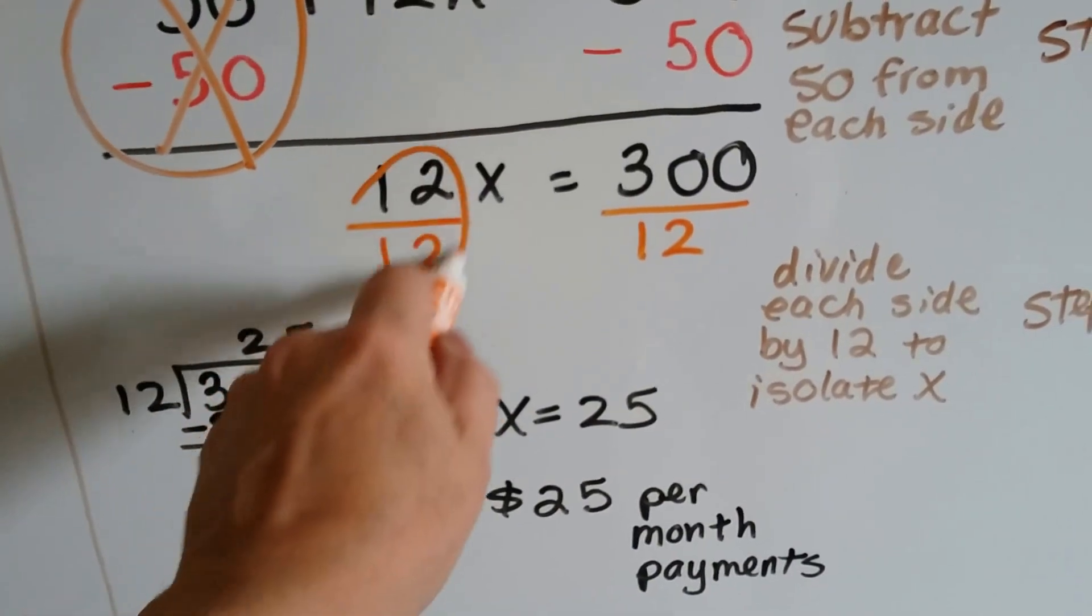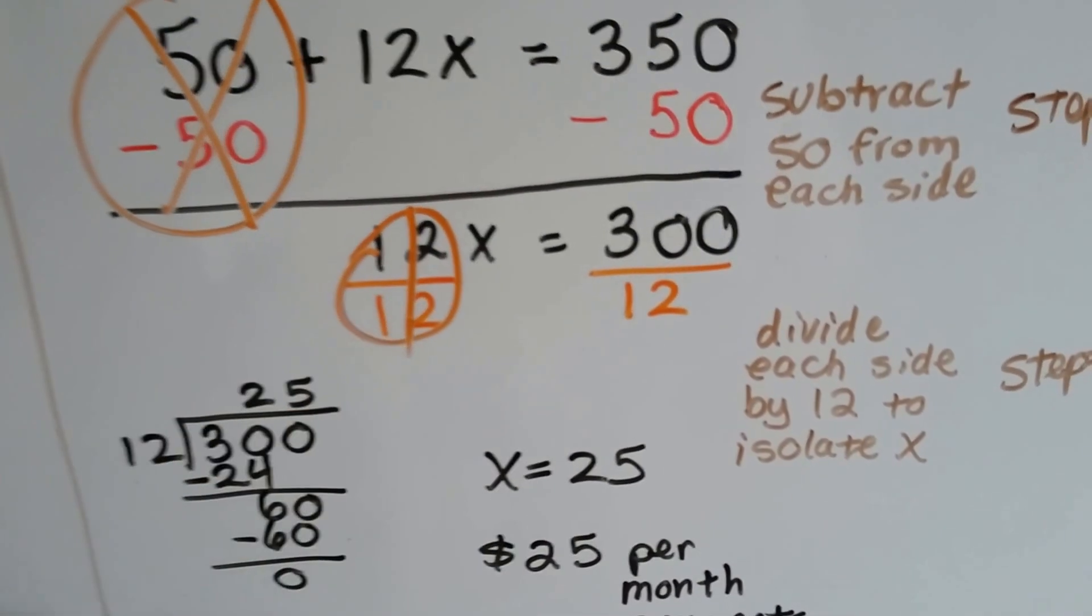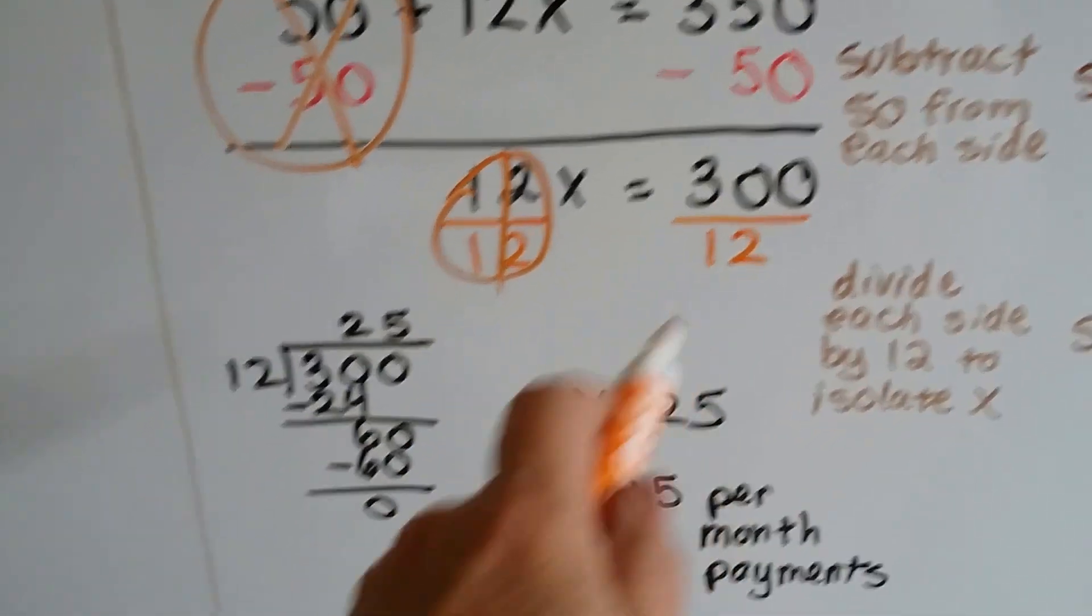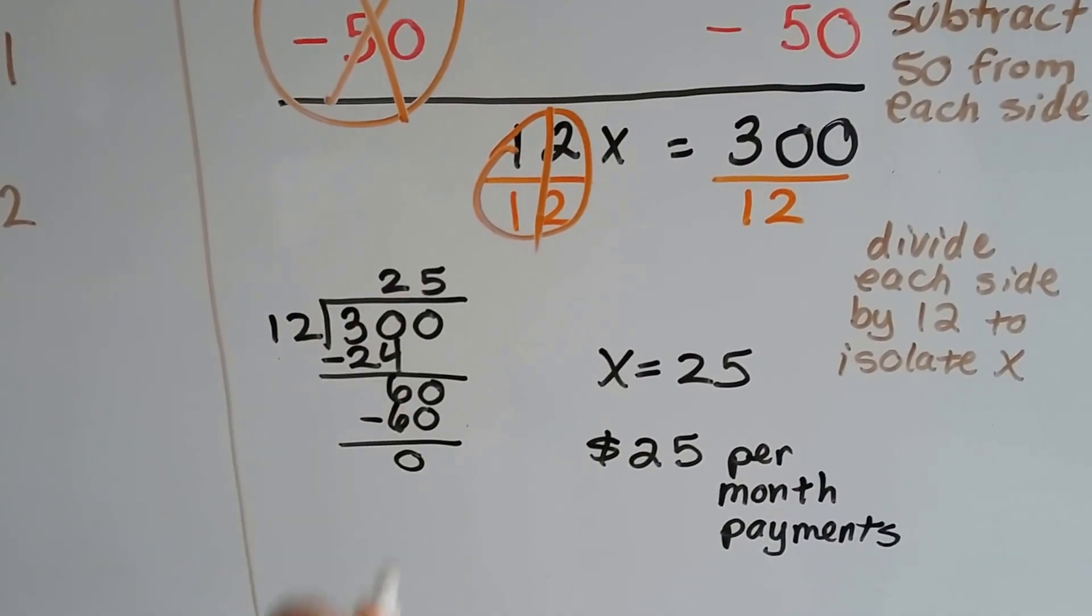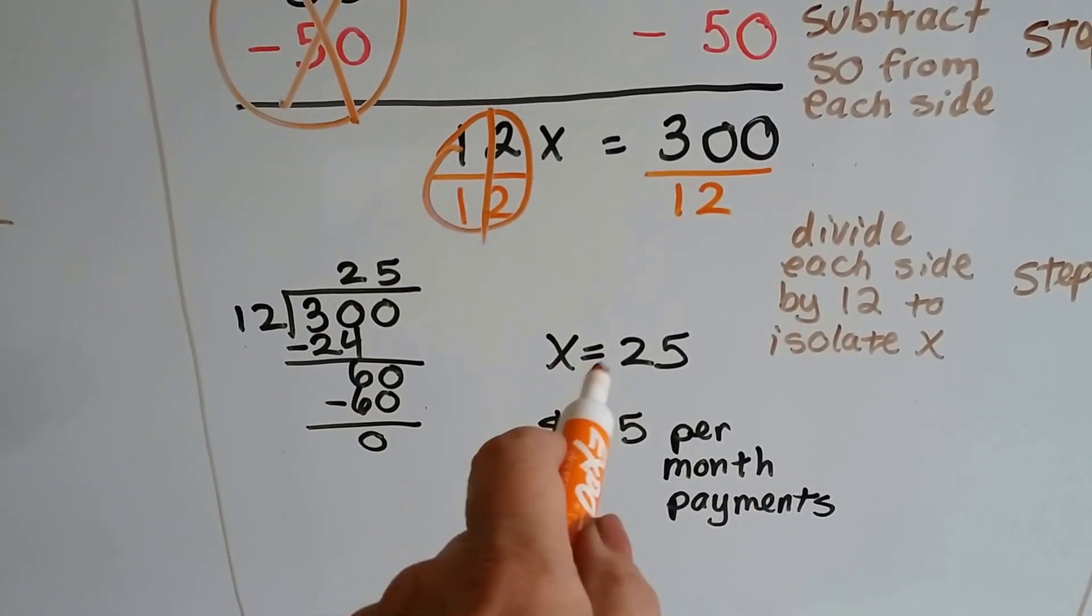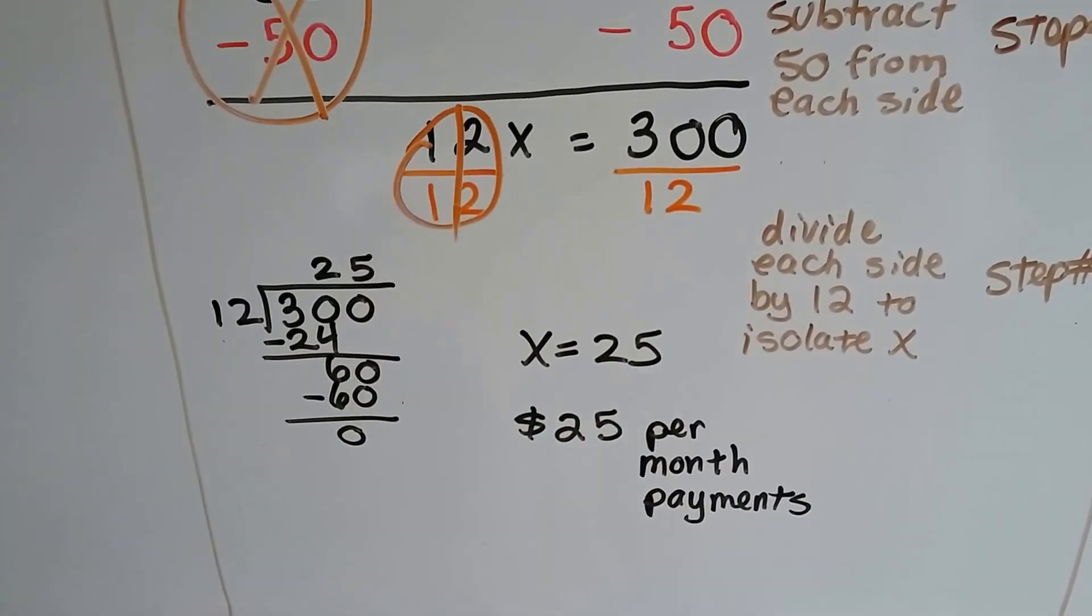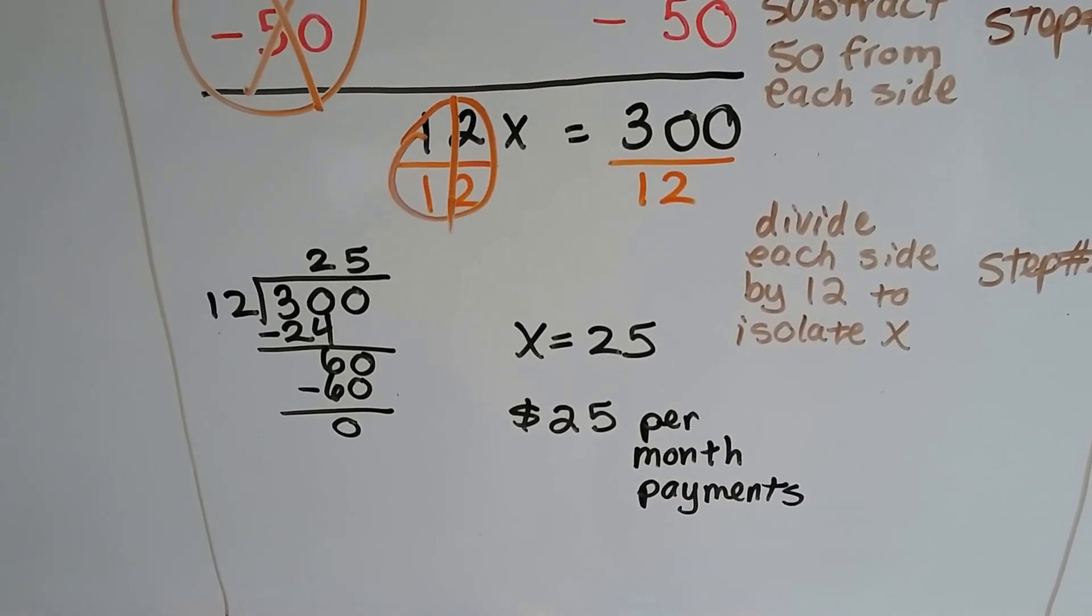12 over 12 creates a 1, so that gives us 1x. 300 divided by 12 is 25. So we know x equals 25. There's $25 per month payments. See?